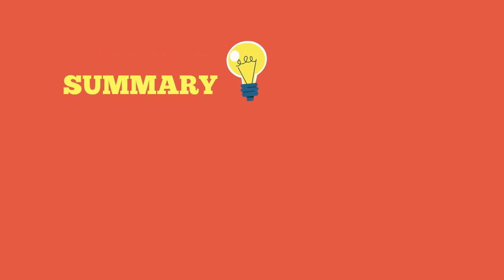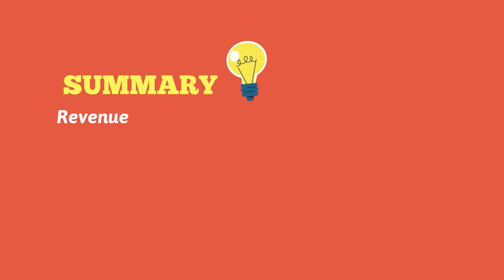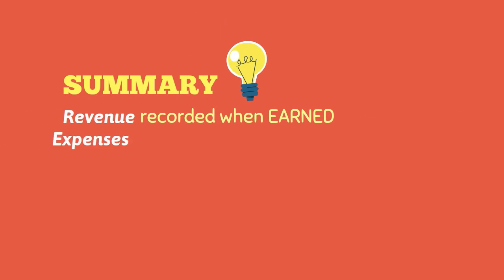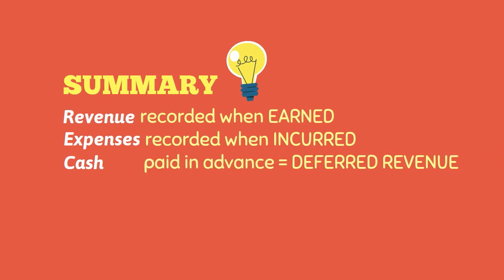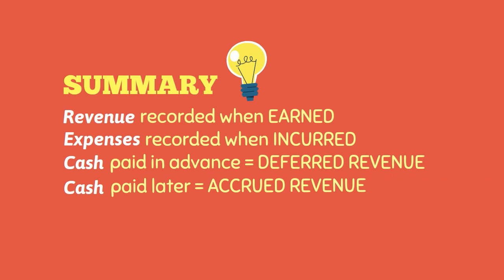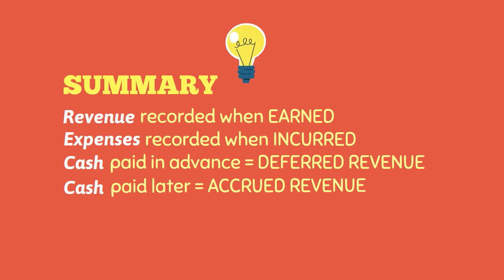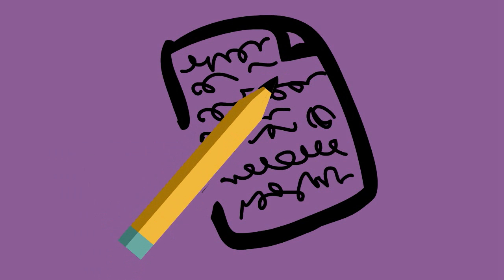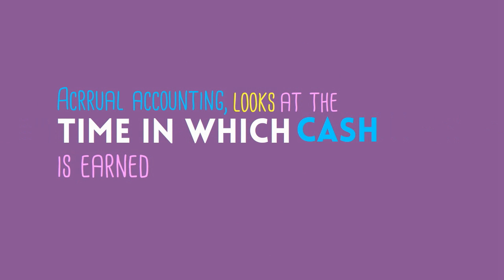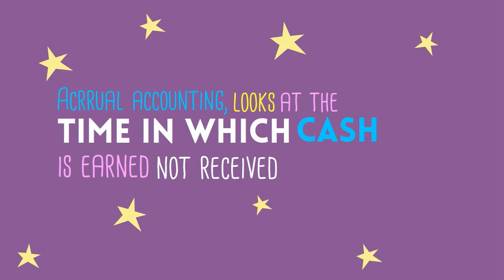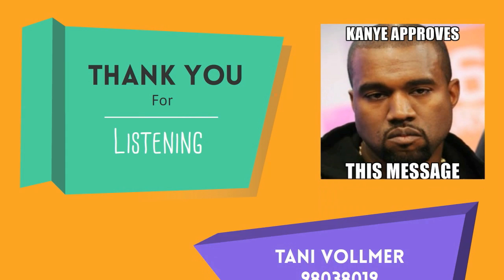Let's take a quick look at what we have just learned from the payment plan of Kanye's tattoos. He showed us that in accrual accounting, revenue is recorded when earned and expenses recorded when incurred. Cash can be paid in advance, which is known as deferred revenue, or it can be paid at a later date, known as accrued revenue. Ultimately, he has illustrated that the accrual basis of accounting is simply based around the time in which the cash is earned, irrespective of when the cash is received. Thank you for listening.